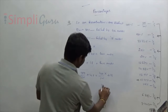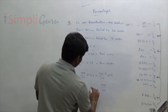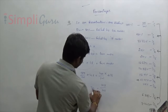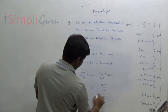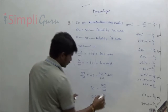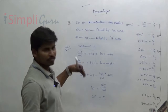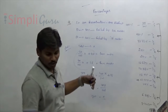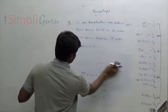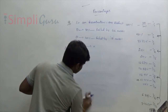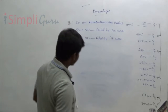Bringing terms to one side: 10X/100 = 30, so X = 300. Total marks = 300. Now for the shortcut method — what can we do?